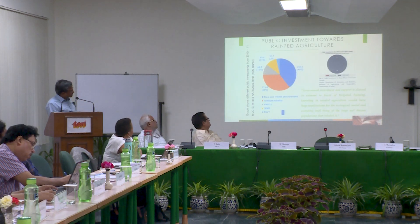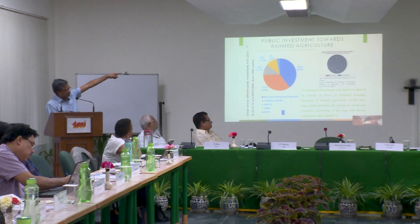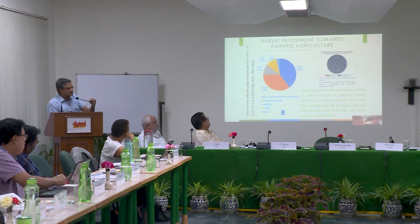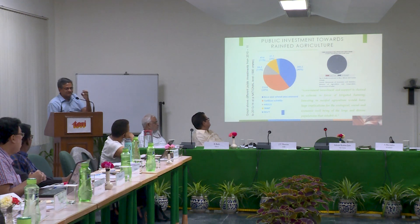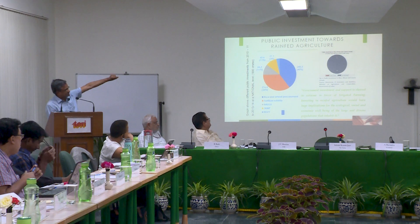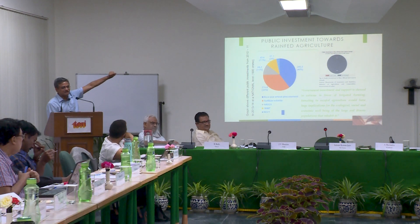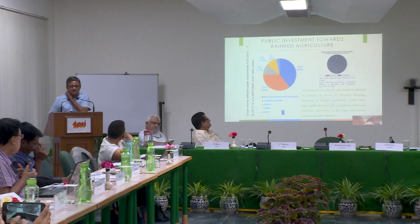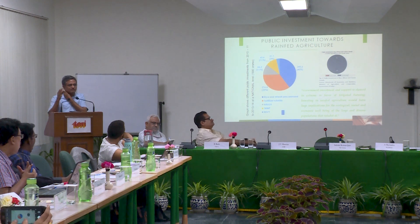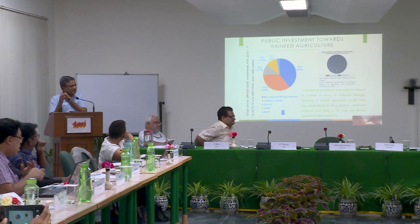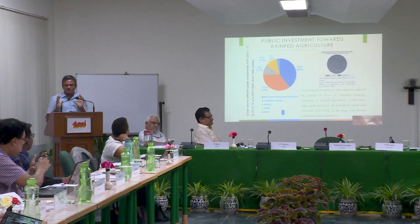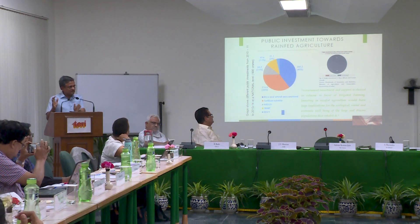Look at the procurement side — the dark pie chart there shows the procurement. All the procurement, all the MSPs, public procurement is all rice and wheat, all related crops. The small little speck of 1.2% or something — that is the procurement of coarse cereals, millets. In spite of the government of India and state governments saying so many things about millets, there is no system established for providing MSP, procurement, go-downs — nothing. Everything is rooted into the green revolution and supporting the green revolution.